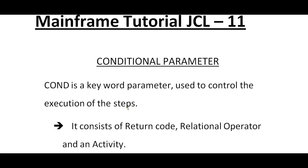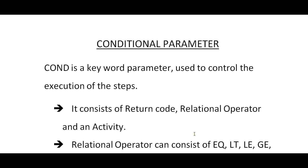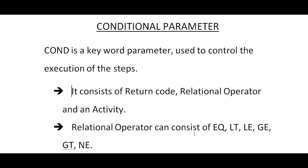What is exactly a conditional parameter? COND is a keyword parameter used to control the execution of the steps. It consists of a return code, a relational operator, and an activity. The relational operator can be equal to, less than, less than or equal to, greater than or equal to, greater than, and not equal to.